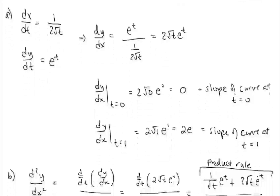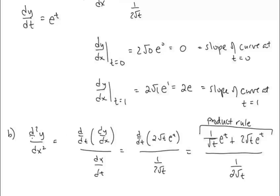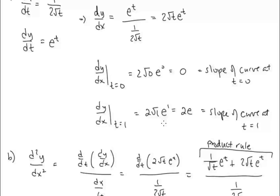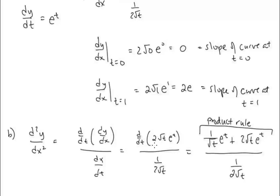Let's find the second derivative. We need the derivative with respect to t of dy/dx, all over dx/dt. Taking the t derivative of 2 radical t times e to the t using the product rule: the derivative of 2 radical t times e to the t gives 1 over radical t times e to the t, plus 2 radical t times e to the t. The denominator is again dx/dt, or 1 over 2 radical t.